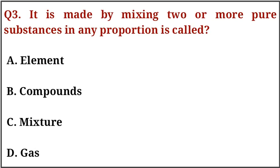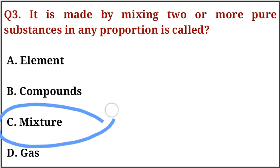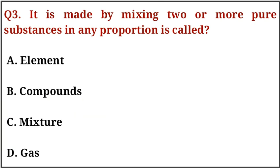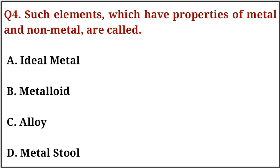Question number three: it is made by mixing two or more pure substances in any proportion is called. The correct answer is option number C, that is mixture. Question number four: such elements which have properties of both metal and non-metal are called. The correct answer is option number B, that is metalloid.